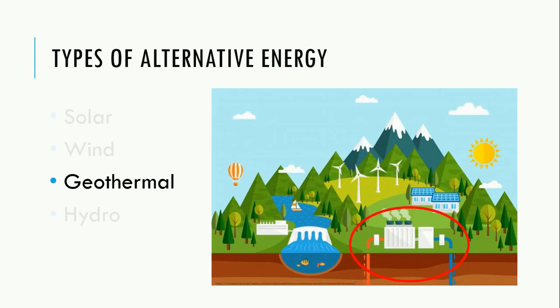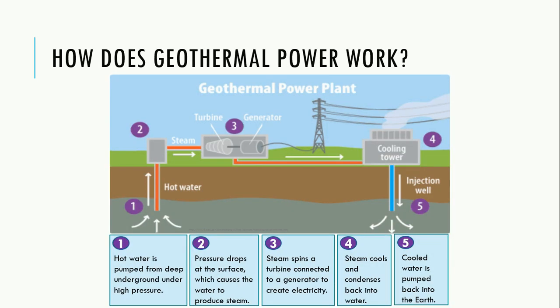Geothermal energy uses the earth itself to generate energy. Hot water from deep within the earth is pumped to the surface under high pressure. Once the water reaches the surface, the pressure drops and the water converts into steam. The steam spins a turbine connected to a generator to create electricity, which is connected to the electrical grid. The steam then travels to the cooling tower, where it cools and condenses back into water, which is pumped back into the earth where it can flow through the interior and heat back up.